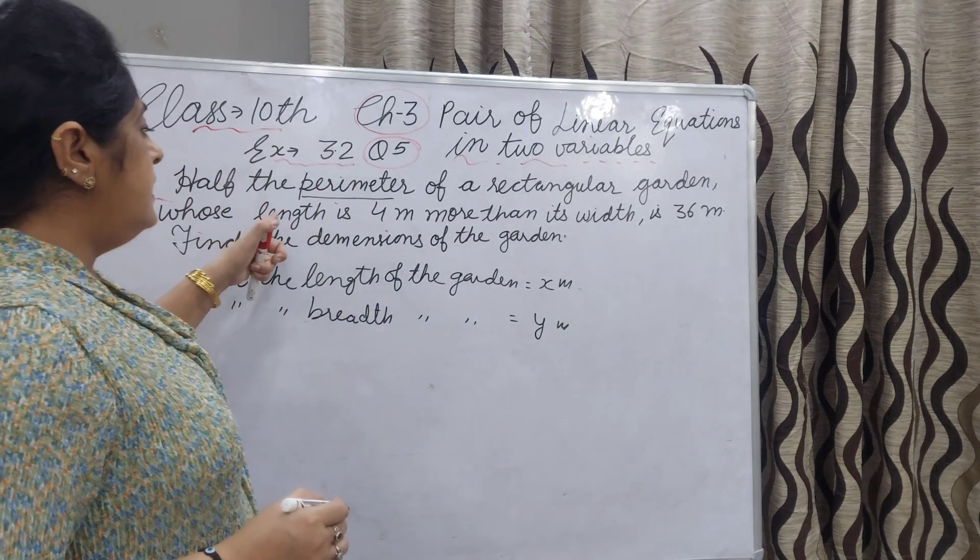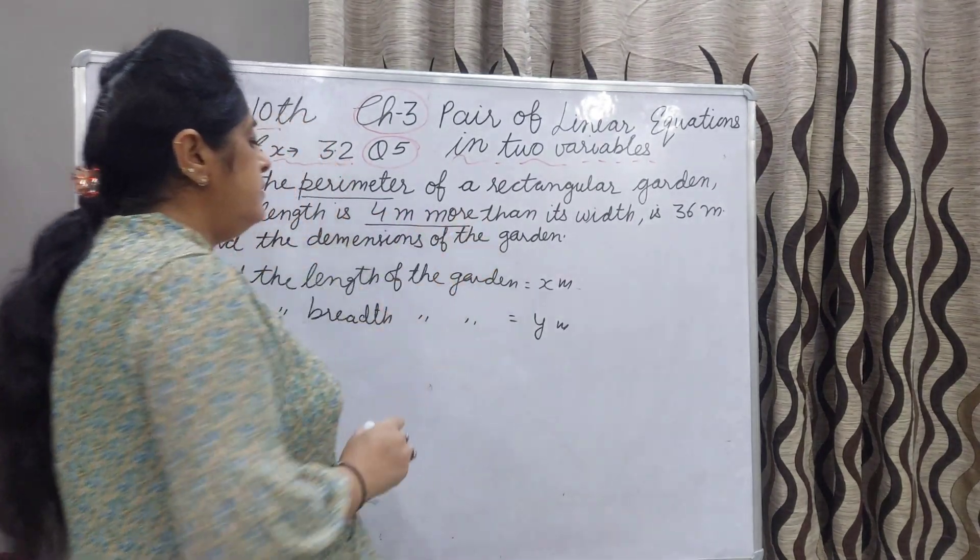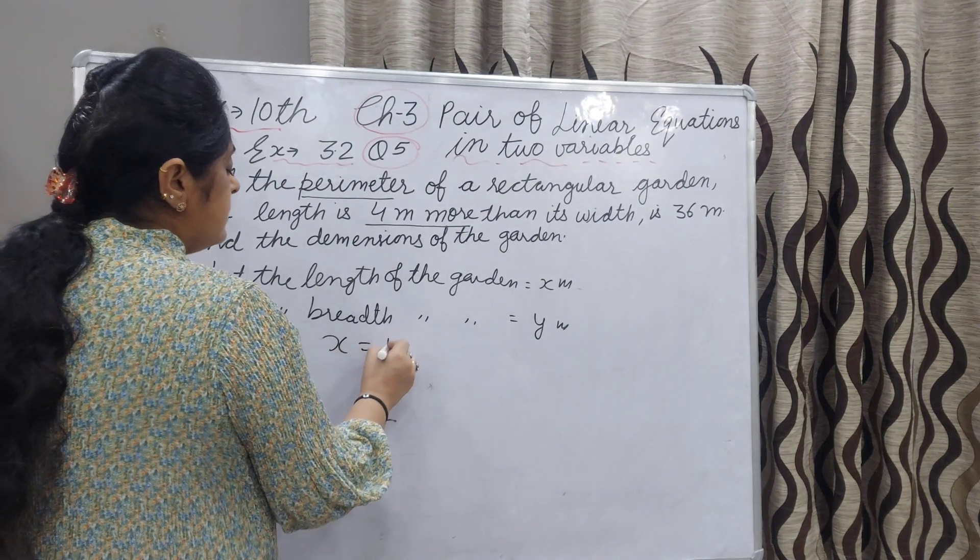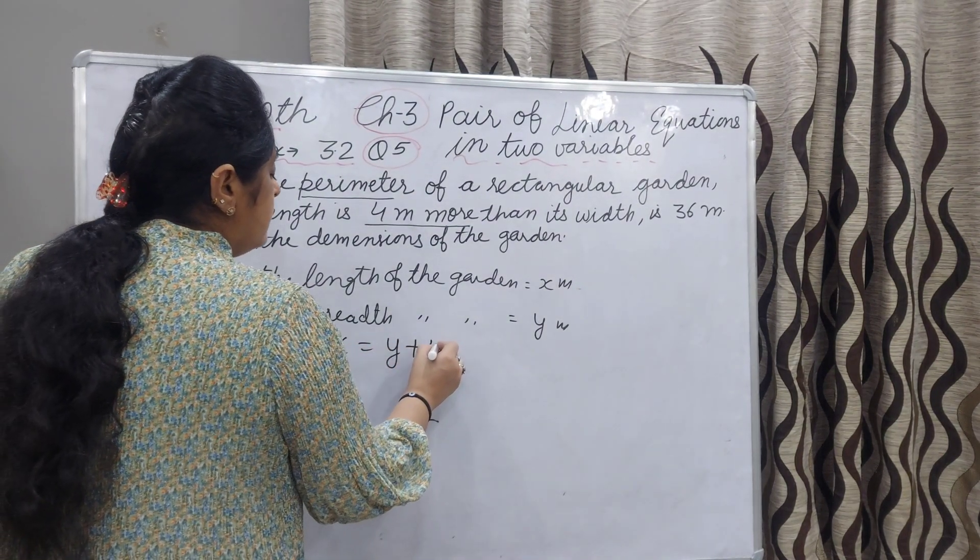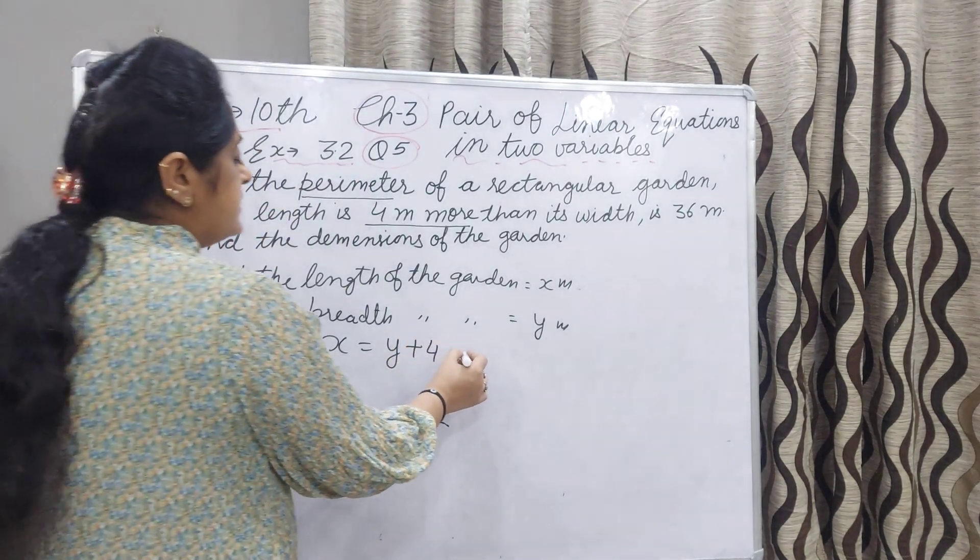Now what is given? Length is 4 meters more. Length is more, it means x is y plus 4. You can add the 4 to the width. That is your first equation.